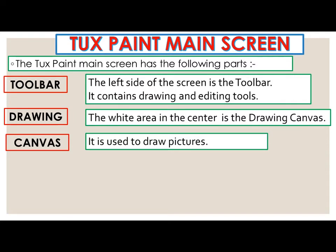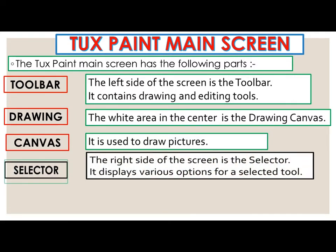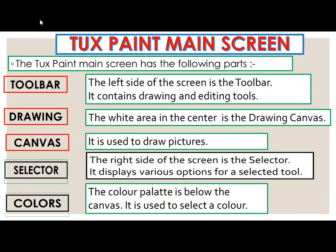The selector is on the right side of the screen — it displays various options for a selected tool. The color palette is below the canvas and it is used to select a color. Color palette ka use color ko select karne ke liye kiya jata hai.